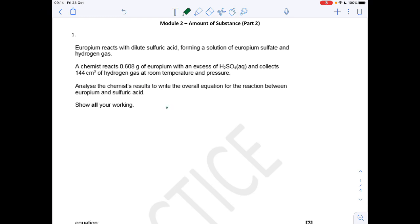The obvious thing to do first is calculate the moles of hydrogen and europium. The moles of hydrogen is the volume 144 over 24,000, which comes out at 0.006. The moles of europium: mass over Mr, 0.608 divided by the Mr of europium, which is 152, equals 0.004.